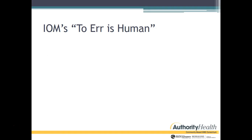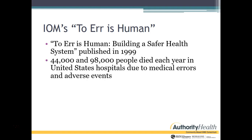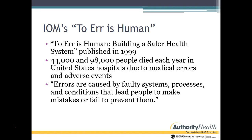So when did patient safety all begin? In 1999, the Institute of Medicine released a report called 'To Err is Human: Building a Safer Health System.' In this report, they noted that 44,000 to 98,000 people died each year in United States hospitals due to medical errors and adverse events. Errors are caused by faulty system processes and conditions that lead people to make mistakes or fail to prevent them.